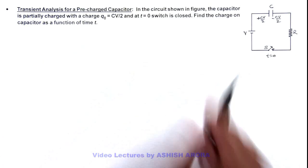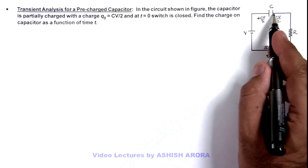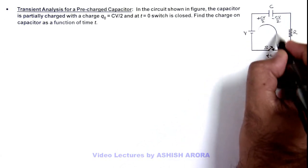In this situation, as we close down the switch, the final charge of capacitor in steady state should be CV. Here it is half charged, so a current will flow.